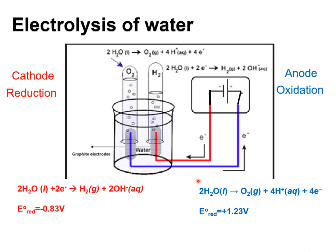This setup is easy to build with household supplies: a nine-volt battery, a container with water, and to increase electrical conductivity you can dissolve some table salt in the water. Collect the two gases using upside-down test tubes. This also neatly demonstrates that you collect twice as much hydrogen as oxygen, because the H:O ratio in water is 2:1.